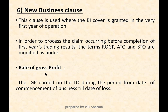Under the new business clause, the terms are modified as follows. Rate of gross profit is revised to mean: the gross profit earned on turnover during the period from the date of commencement of business till the date of loss. So if a loss occurs six months after commencement, the turnover and gross profit for those six months are used, and gross profit divided by that turnover gives the rate of gross profit.